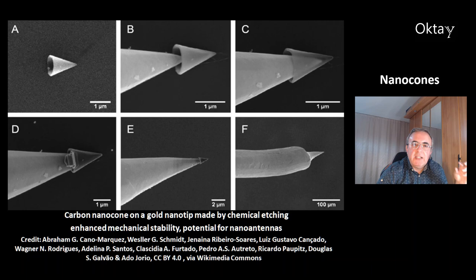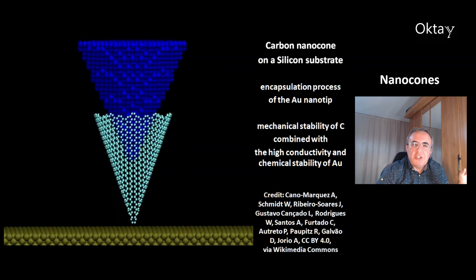These are pictures of a carbon nanocone on a gold nanotip, which was made by chemical etching. This gives the gold nanotip enhanced mechanical stability. These nanocones have a potential for nano antennas.